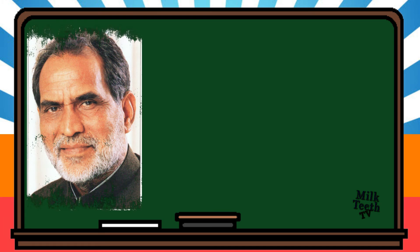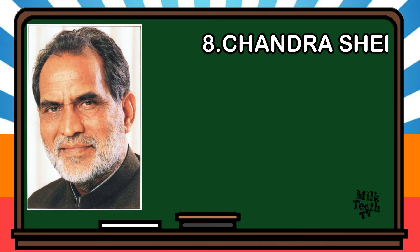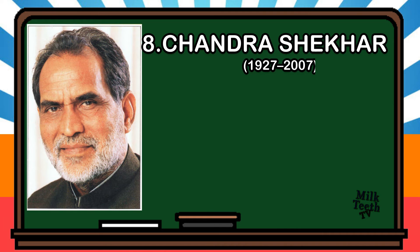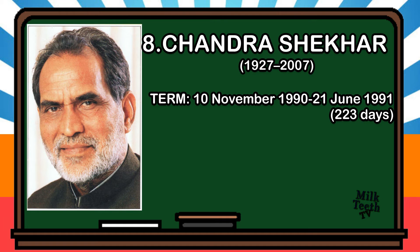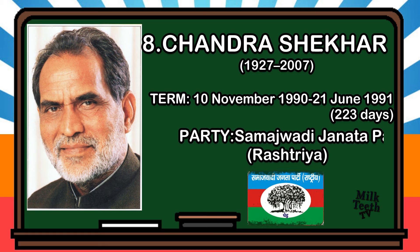The eighth Prime Minister of India was Chandrasekhar. He was born in 1927. He became the Prime Minister of India on 10th November 1990 and served up to 21st June 1991, for a period of 223 days. Party: Samajwadi Janata Party (Rashtriya).